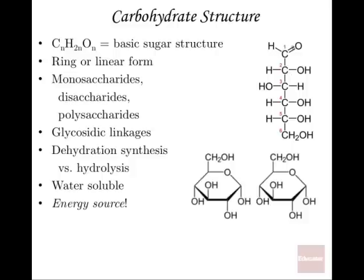Carbon likes to make four bonds — that's why in the ring structure, at each carbon corner you see four connections. In organic chemistry shorthand, every unlabeled corner in the ring is a carbon, and the H atoms are implied. Monosaccharides are single sugars; glucose is the classic one. Disaccharides are double sugars — connecting two glucoses makes maltose, a disaccharide also known as malt sugar.